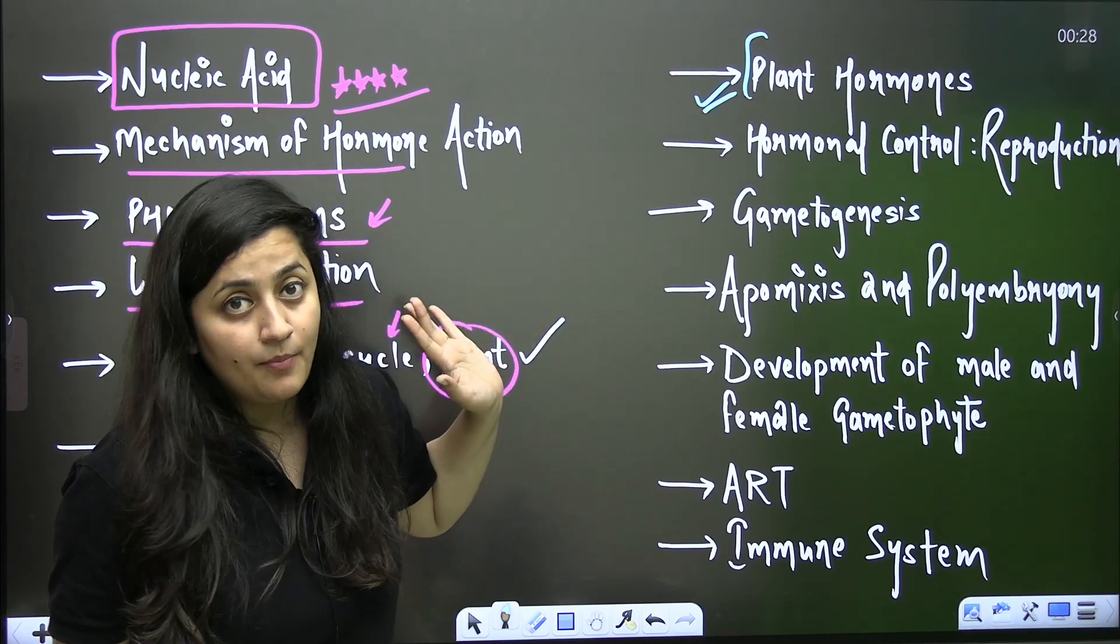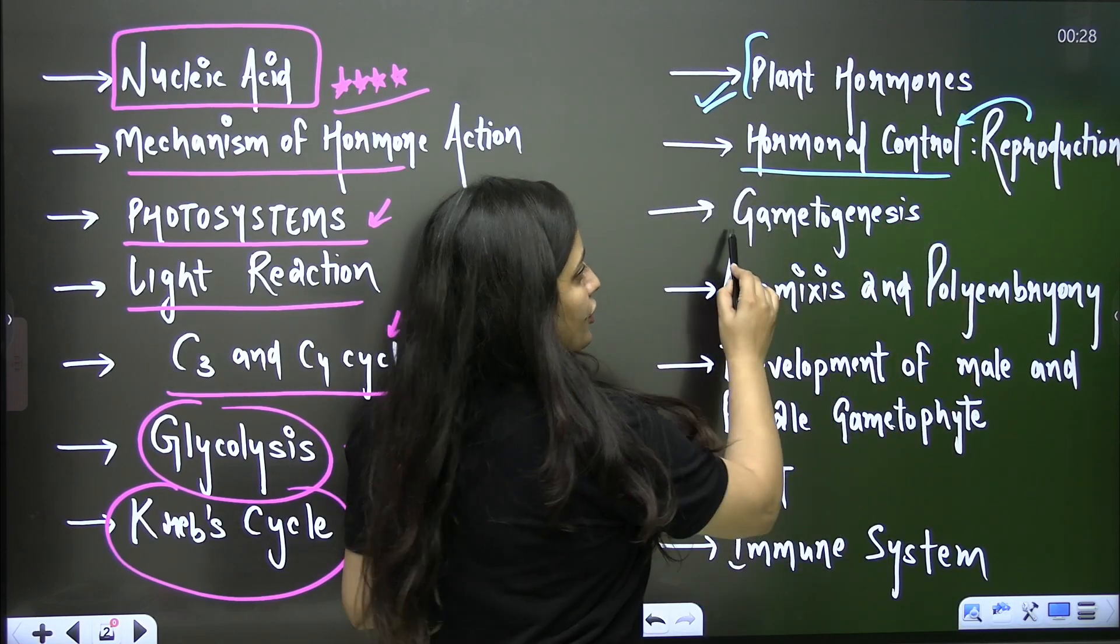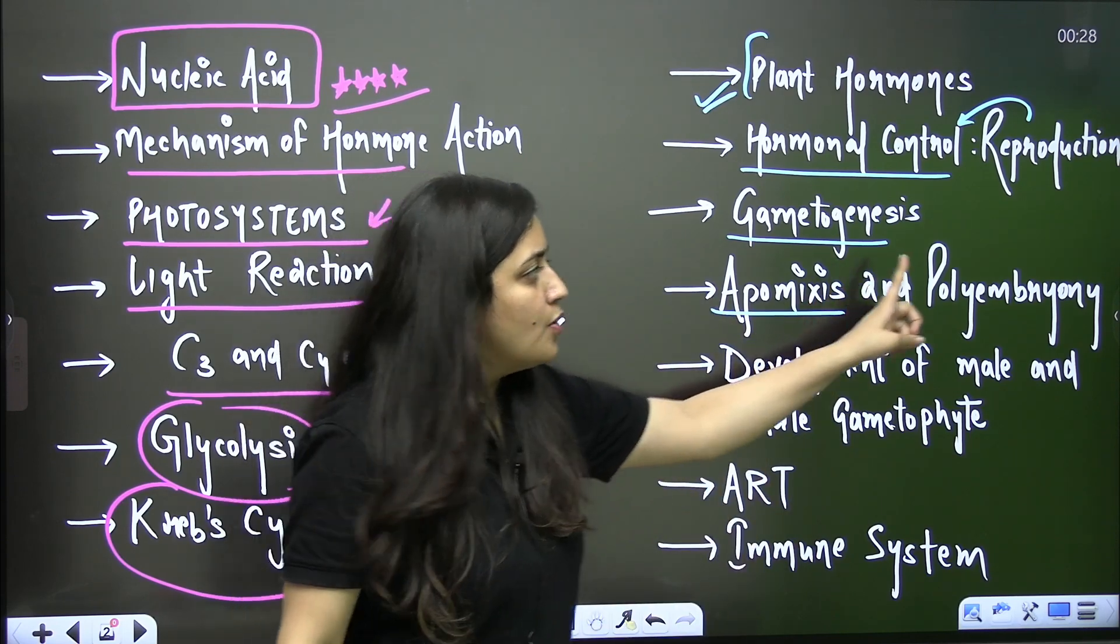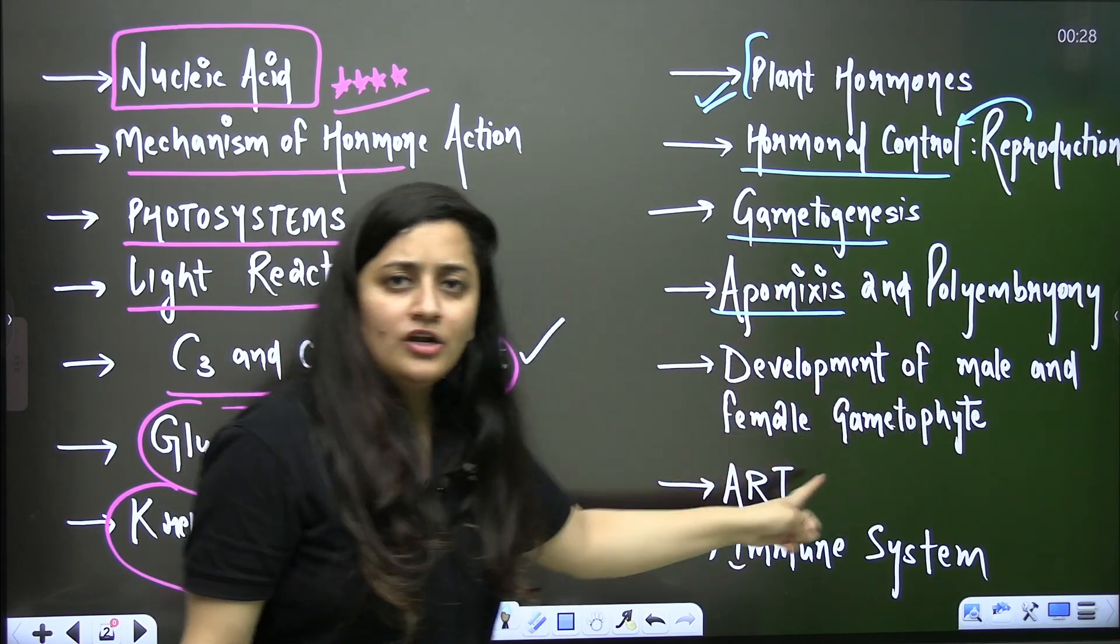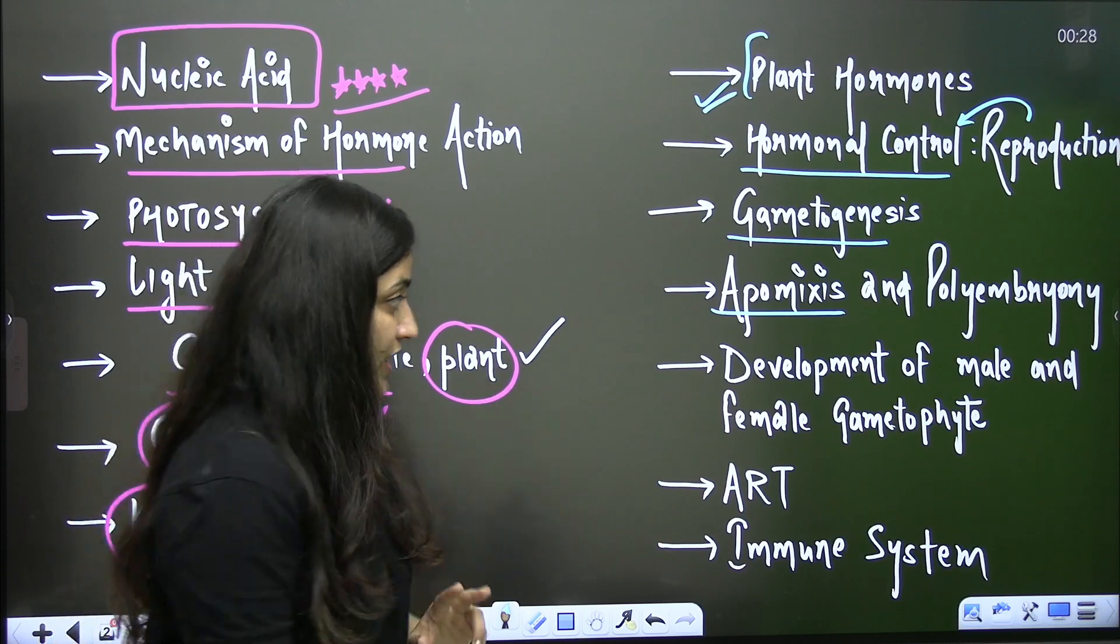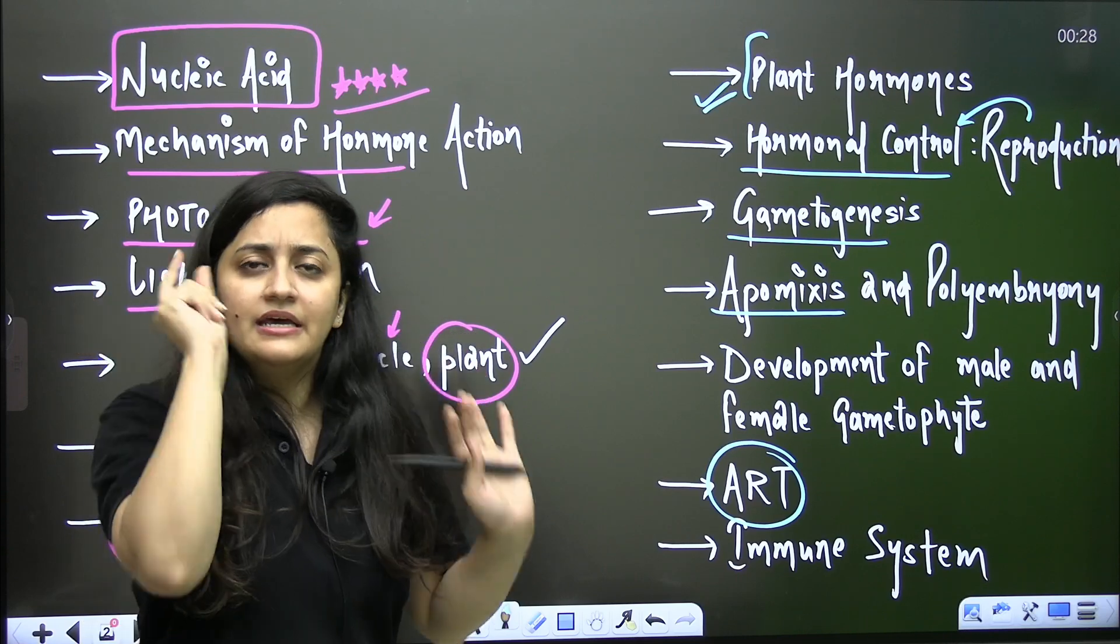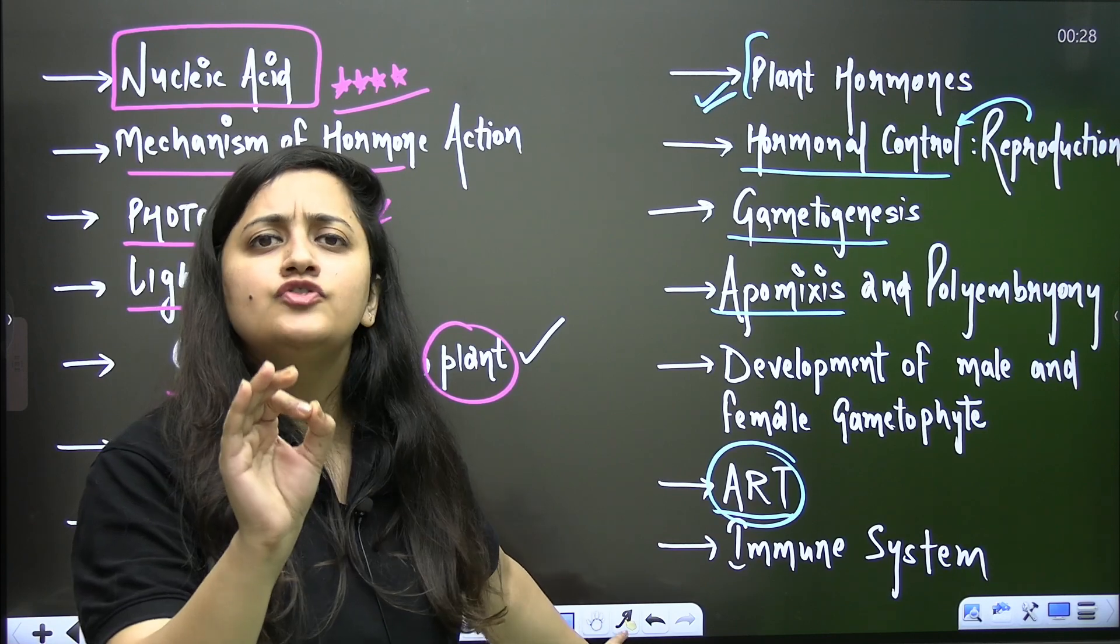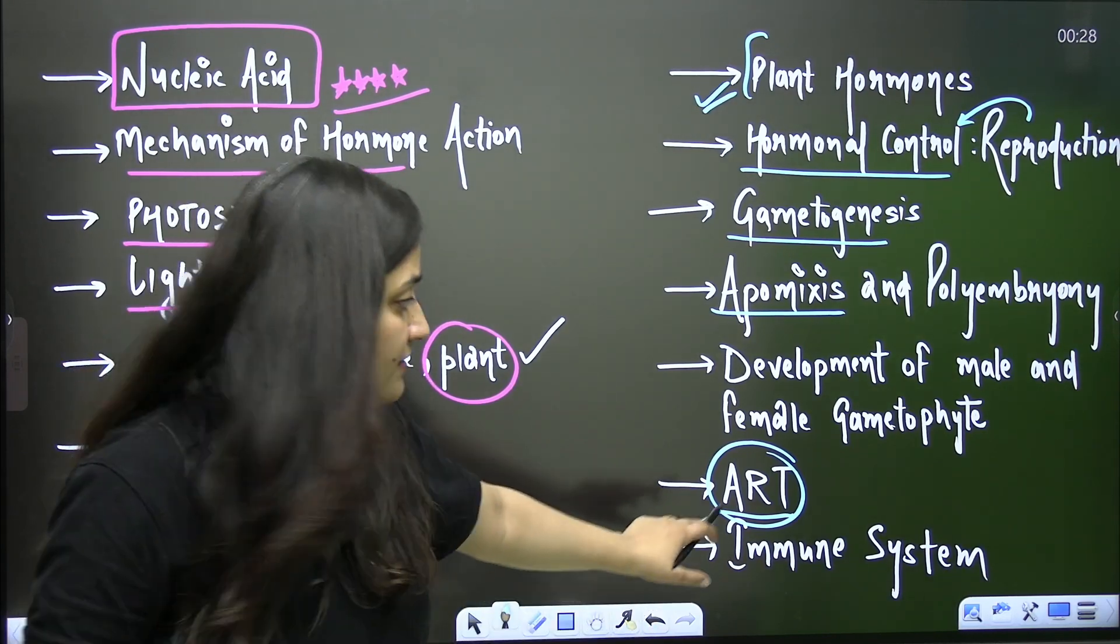Then human reproduction - hormonal control, human reproduction, gametogenesis. Then from sexual reproduction in flowering plants - apomixis, polyembryony, development of male and female gametes. You can do it all together. Again two to three questions you guys can get from this part as well. Then ART - assisted reproductive technology, 110% right? Every year you used to get questions from this part. And to understand this part, I think you just need one hour or two hours maximum, two hours if you're doing it for the first time, otherwise one hour is more than sufficient to master this particular topic.